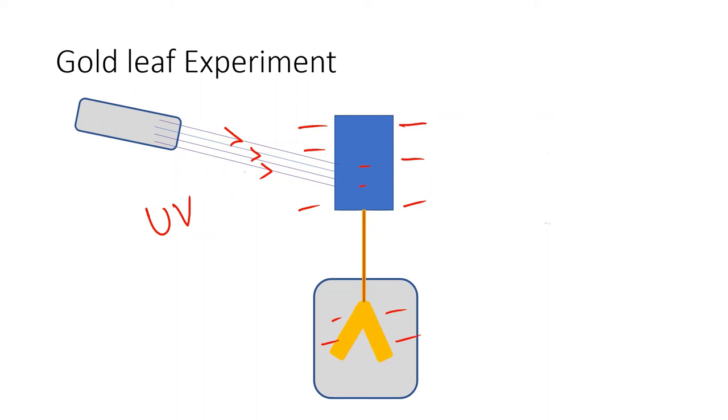When UV rays fall on the metal plates, the gold leaves come close to each other. Wow! This is a wow moment for us and the person who must have experimented it for the first time.